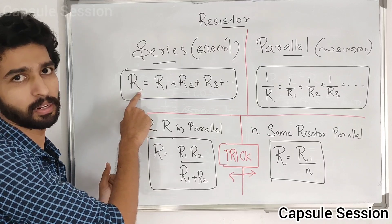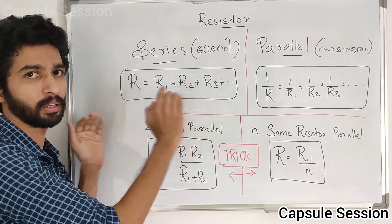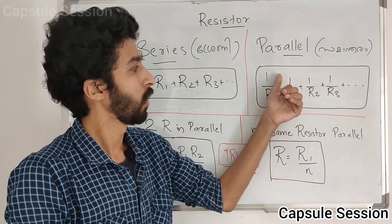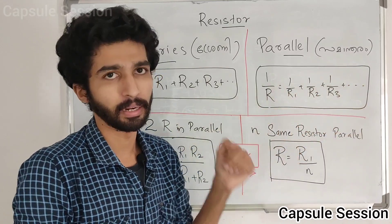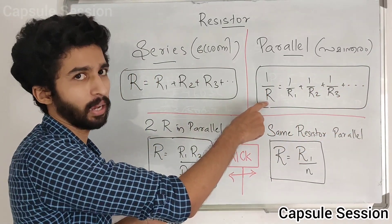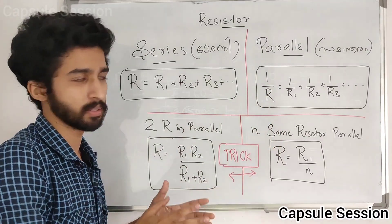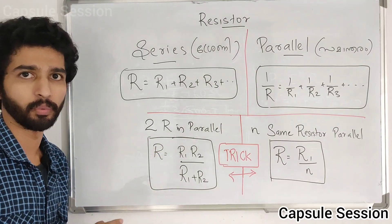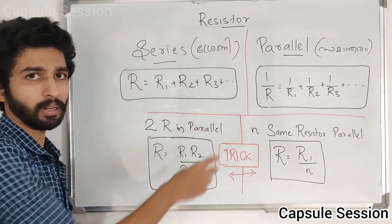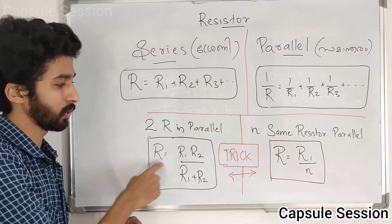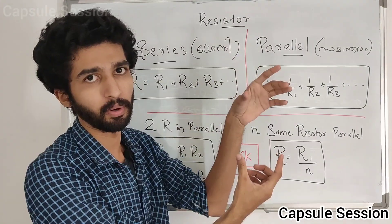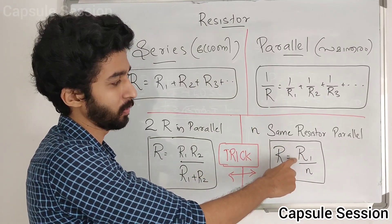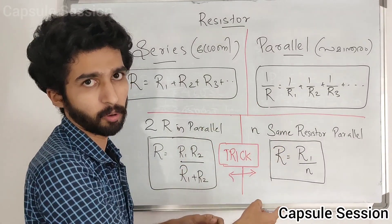For the series connection, the total resistance is R1 plus R2 plus R3. For the parallel connection, the reciprocal of total resistance equals 1/R1 plus 1/R2 plus 1/R3. If all resistors have the same resistance value R1, and there are N resistors connected in parallel, then the total resistance is R equals R1 divided by N.